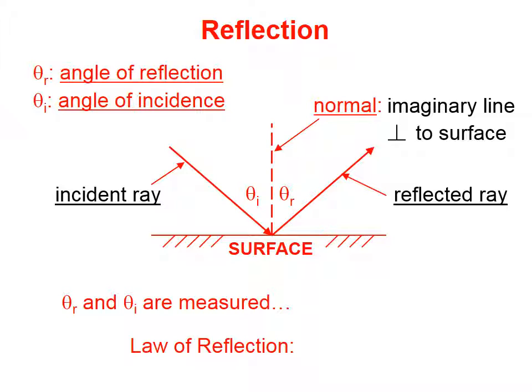which is an imaginary line that's perpendicular to the surface, right at the point where the incident ray hits the surface.